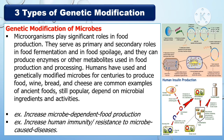Another type of genetic modification is the genetic modification of microbes. Microorganisms play significant roles in food production, serving as primary and secondary agents in food fermentation and food spoilage. They can produce enzymes or other metabolites useful in food production and processing. Humans have used unmodified microbes for centuries to produce food — wine, bread, and cheese are common examples that still depend on microbial ingredients and activities. Examples include increased microbe-dependent food production and increased human immunity or resistance to microbial disease.